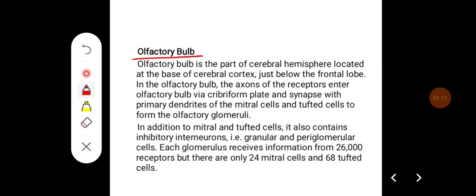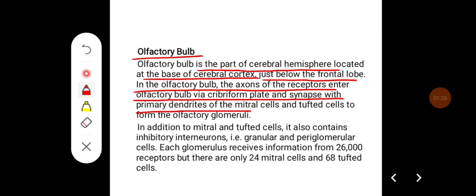Olfactory bulb is a part of cerebral hemisphere located at the base of the cerebral cortex, just below the frontal lobe. In olfactory bulb, the axons of receptors enter olfactory bulb via cribriform plate and synapse with primary dendrites of mitral cells and tufted cells to form olfactory glomeruli.